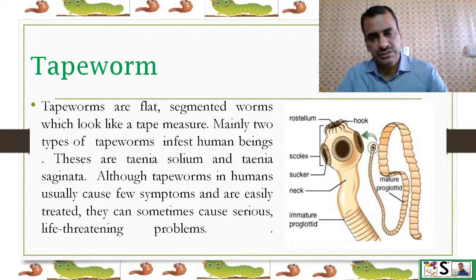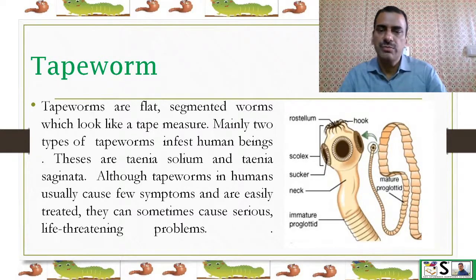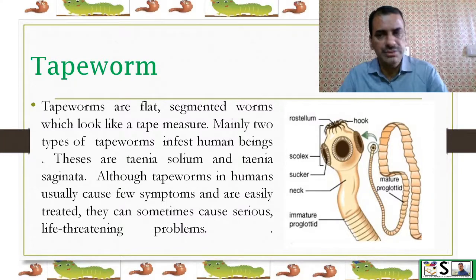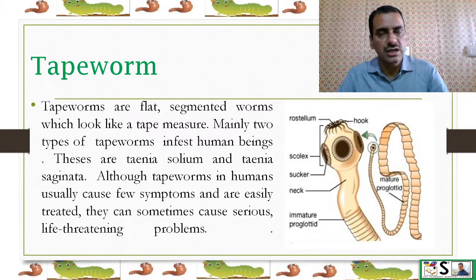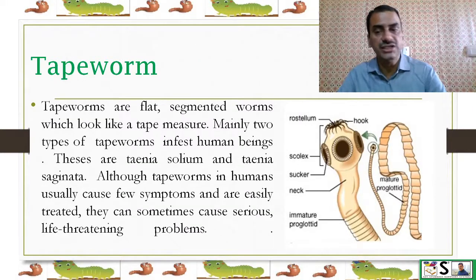The next important worm infestation is tapeworm. It is named tapeworm because it resembles a tape measure. Tapeworms are flat, segmented worms. Mainly two types infest human beings: Taenia solium and Taenia saginata. Although tapeworms usually cause few or no symptoms and are easily treated, sometimes life-threatening complications may occur.